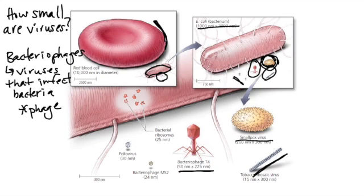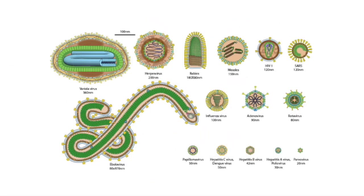All three of those are pretty large viruses. Most viruses are much smaller, like polio here is one of our smallest at 30 nanometers. Bacteriophage MS2 is about 24 nanometers. Bacterial ribosomes are 25 nanometers. So this bacteriophage MS2 is about the same size as a ribosome.